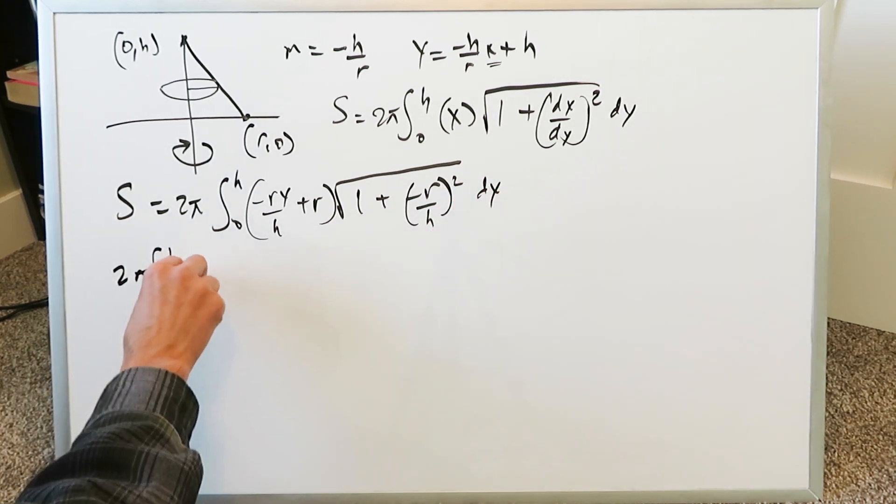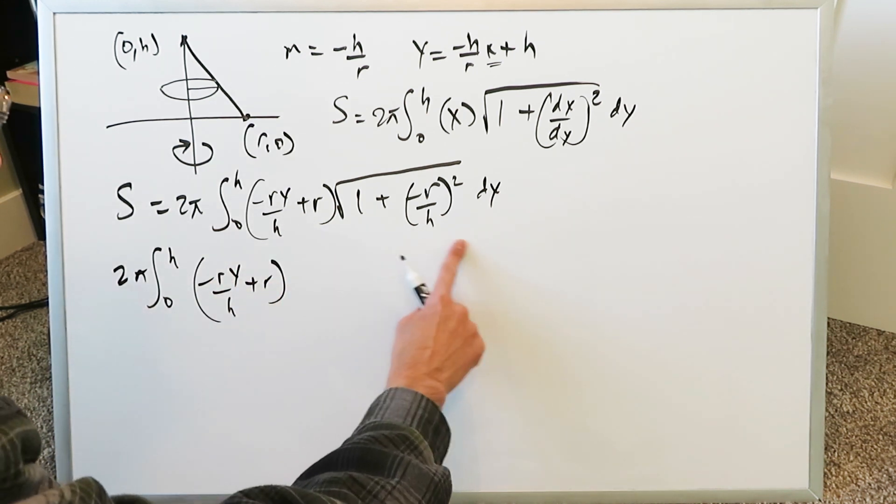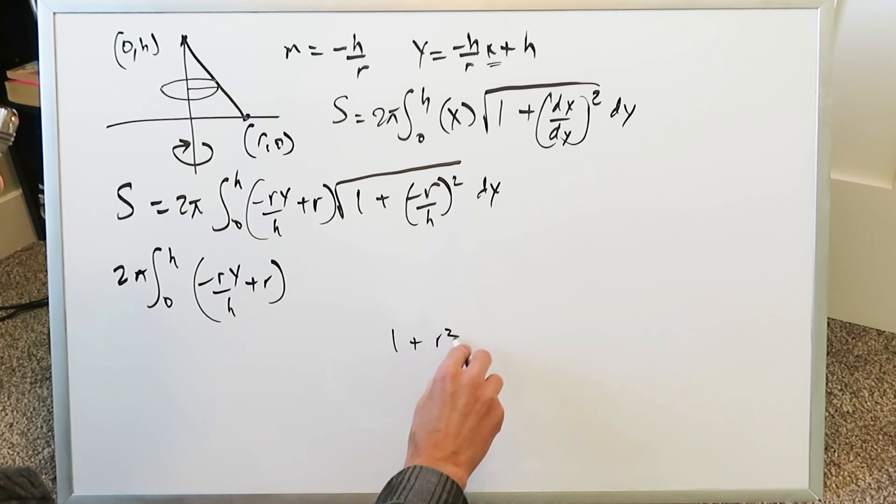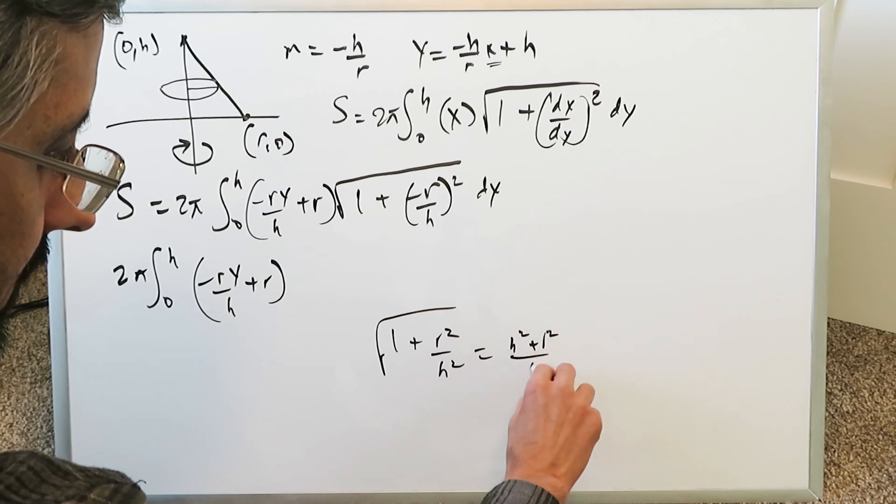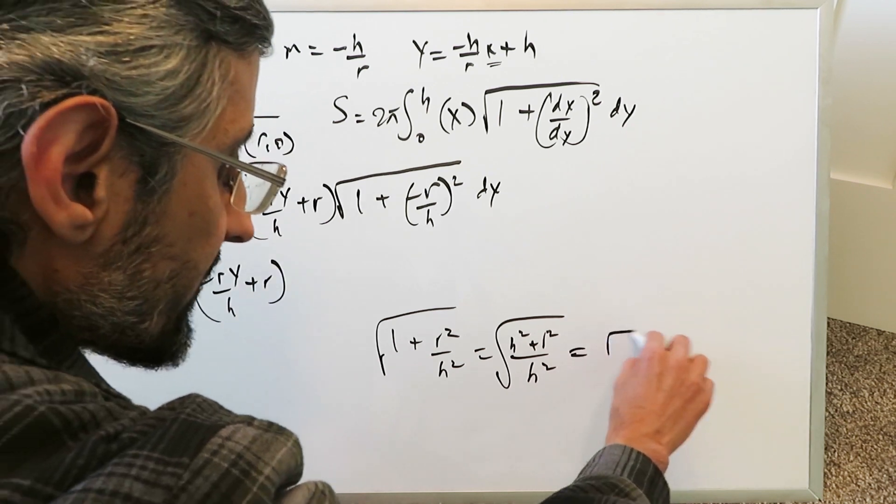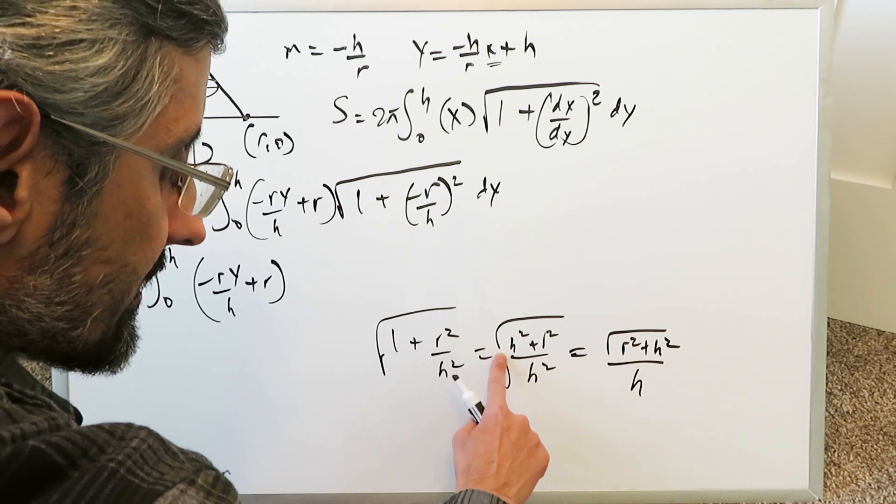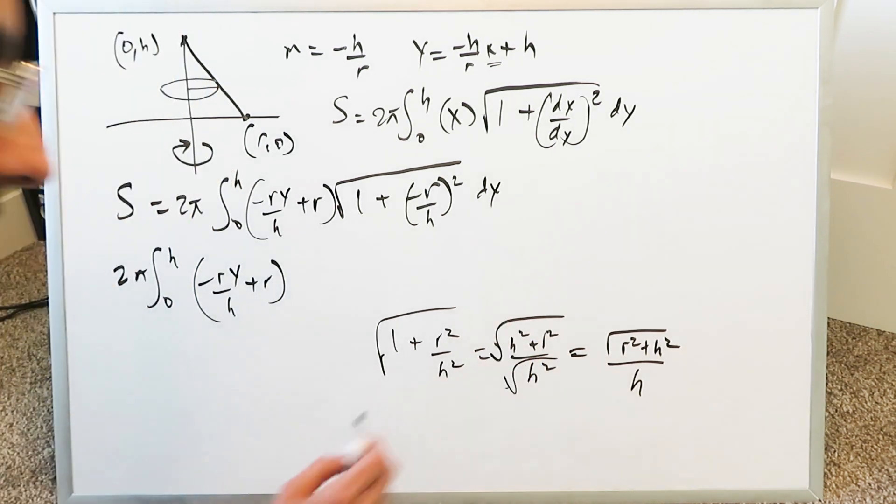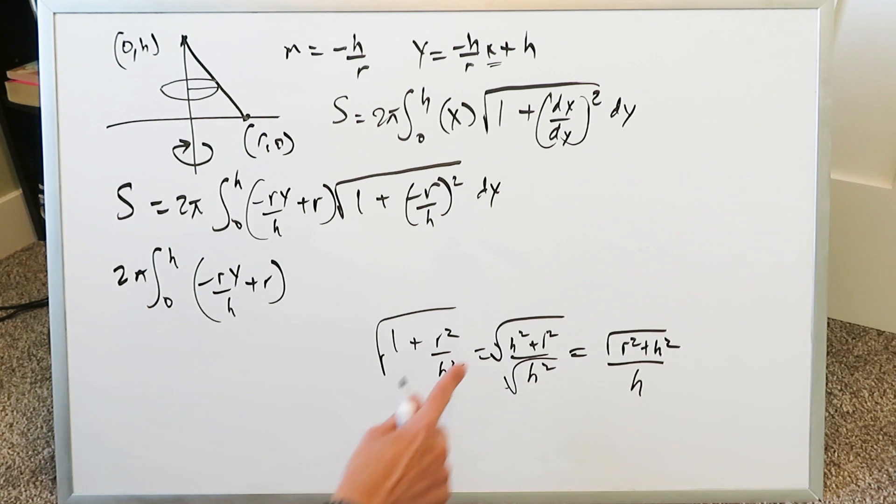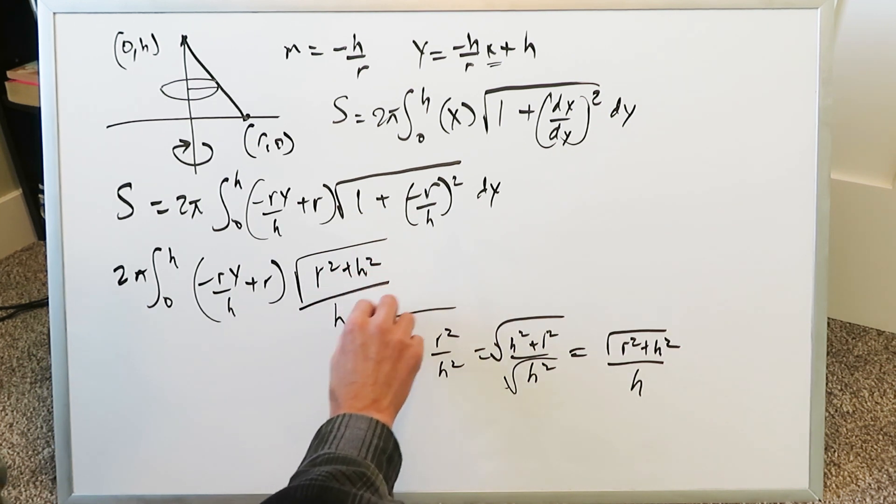Continue from here, 2 pi, 0 to h. We have minus ry over h plus r. And now let's work on this. If you work on this, you're basically looking at 1 plus r square over h square in a root, which is h square plus r square over h square within a root because you're doing a common denominator, which if you simplify everything is r square plus h square over h. So from here now we're seeing r square plus h square all over h dy.